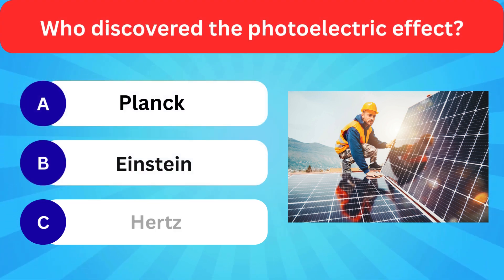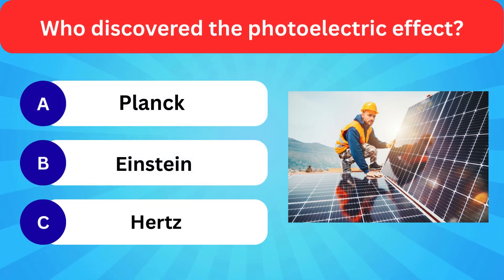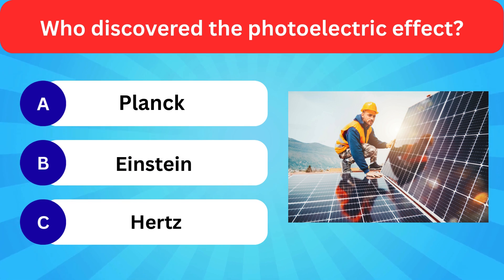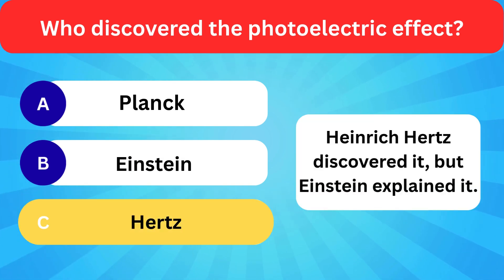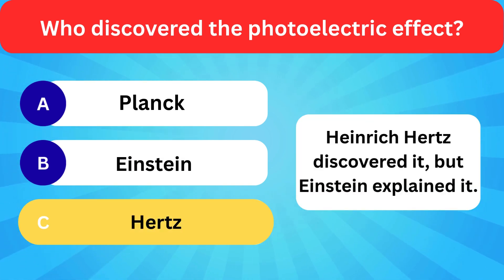Who discovered the photoelectric effect? Options: Planck, Einstein, Hertz. Correct answer is Hertz — Heinrich Hertz discovered it, but Einstein explained it.